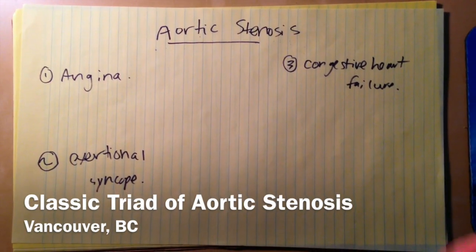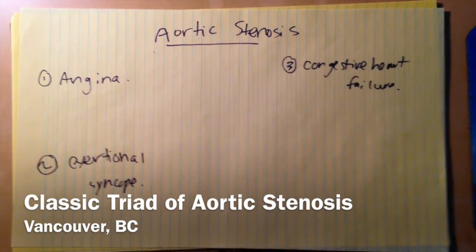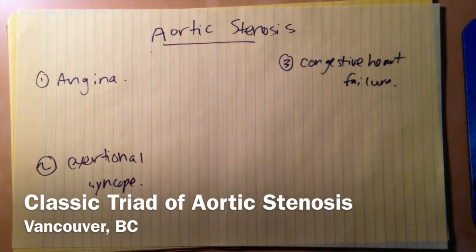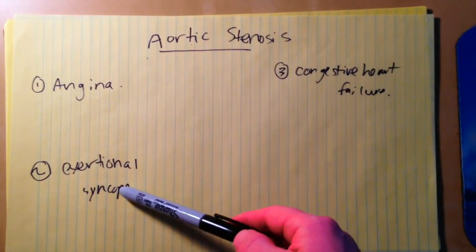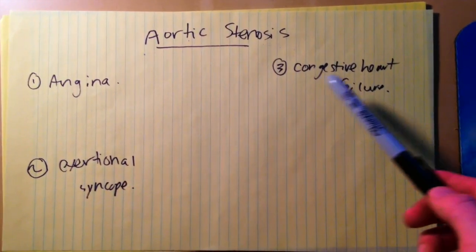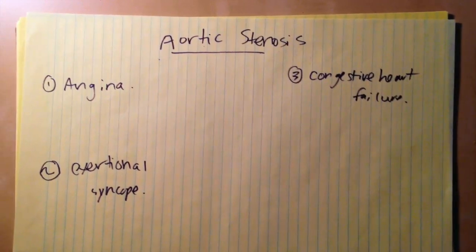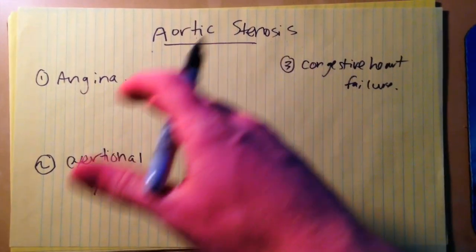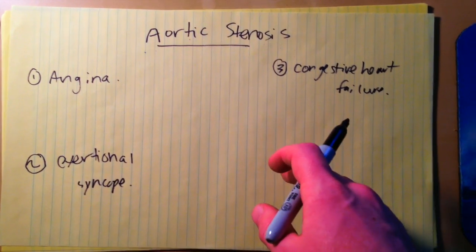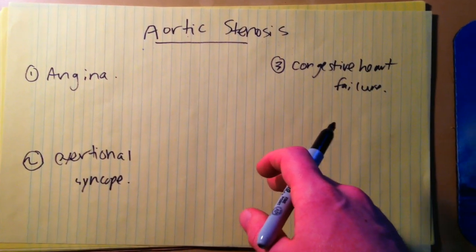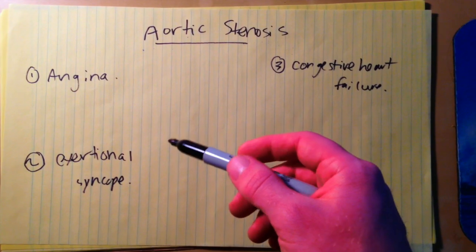Today we'll cover the classic triad of aortic stenosis — the classic triad being angina, exertional syncope, and symptoms of congestive heart failure. I'll talk about the pathophysiology as to why each of these three pieces of the triad happen when you have a patient with aortic stenosis.